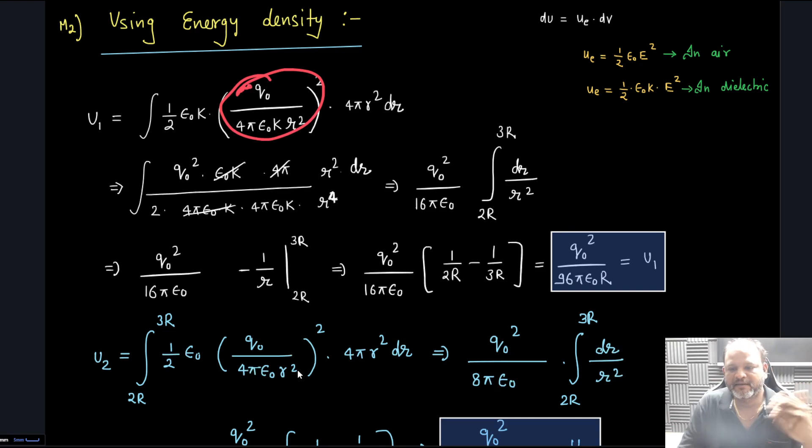In presence of dielectric it will become e external by k. Earlier when dielectric is not present that is behaving like e external which is kq by r square. Now since dielectric is present by k will become the field and that volume is 4π r square dr. If we simplify and integrate this from 2r to 3r.